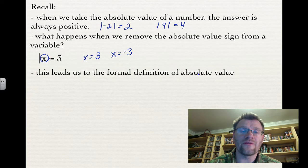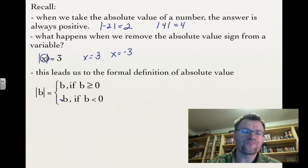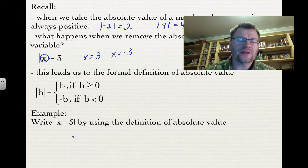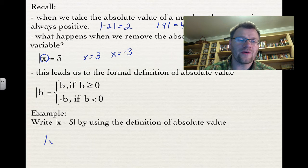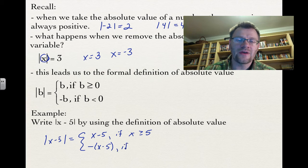This leads us to the formal definition of absolute value: the absolute value of b equals b if b is greater than or equal to 0, and equals negative b if b is less than 0. For example, the absolute value of x minus 5 equals positive (x minus 5) if x is greater than or equal to 5, and equals negative (x minus 5) if x is less than 5.